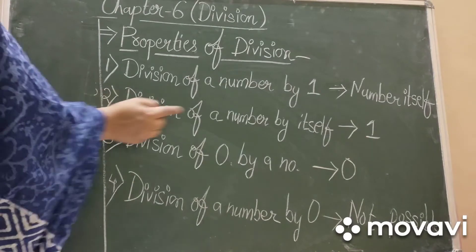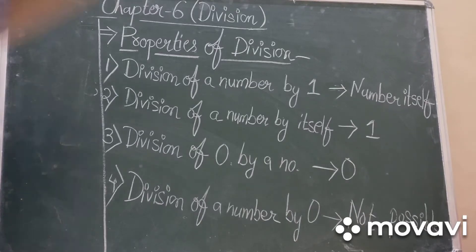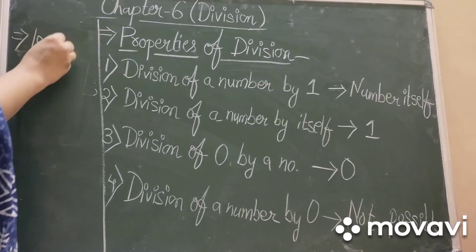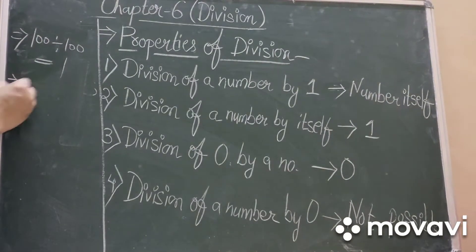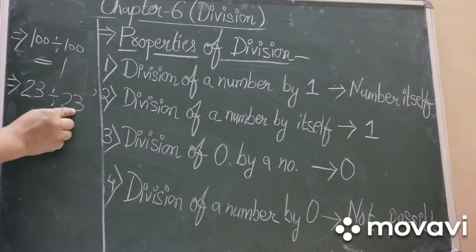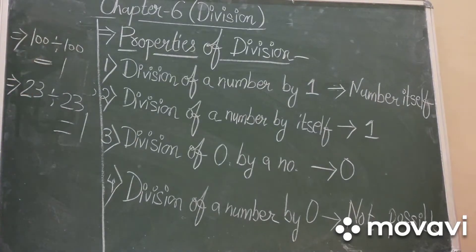Second property: division of a number by itself gives you one as the quotient. Kisi bhi number ko agar aap usi number se divide karte hai, to aapko quotient milta hai one. For example, hundred divided by hundred is one. Twenty-three divided by twenty-three is also one. Whenever we divide any number by itself, the answer is always equal to one.